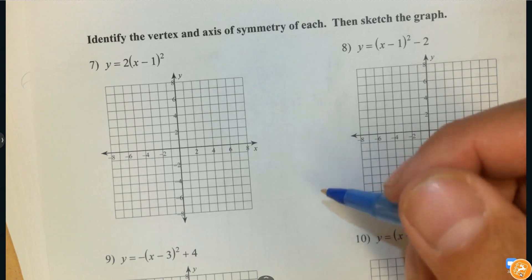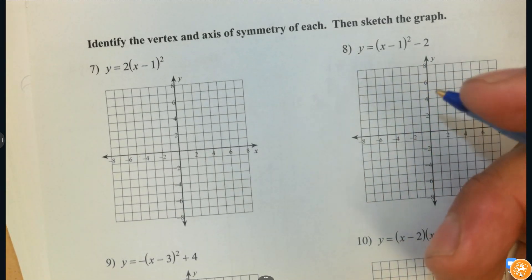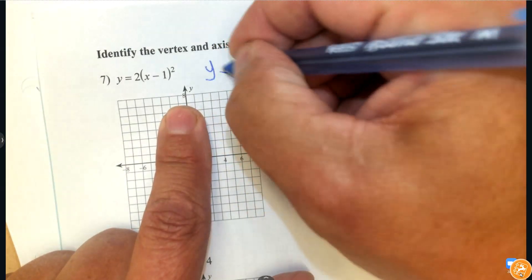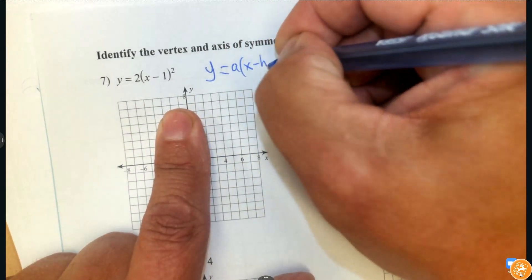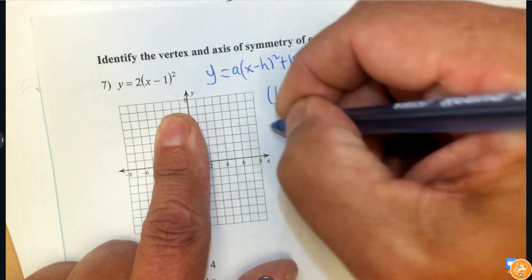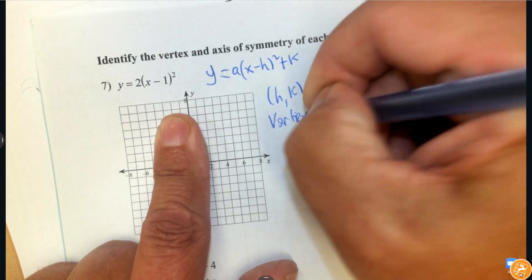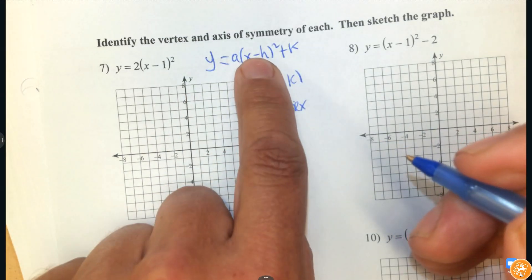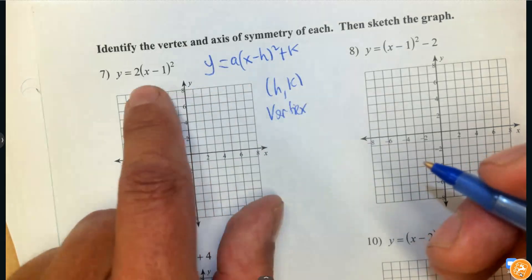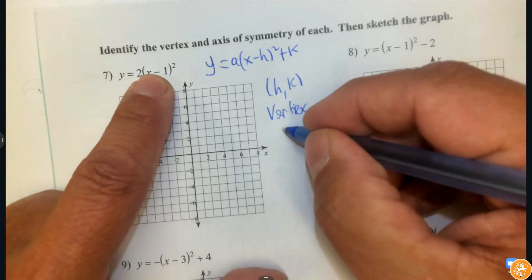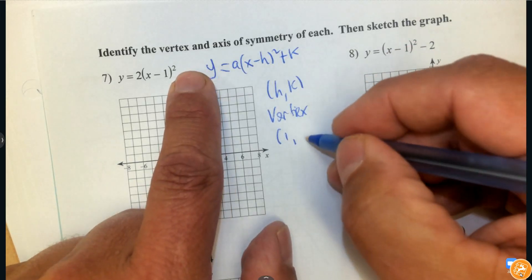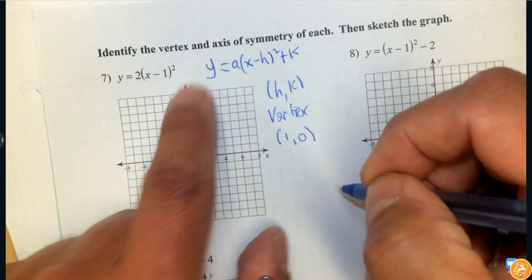So these parabolas are either in vertex form or in intercept form. So this is in vertex form. So vertex form looks like this. And hk is what we call the vertex. It's important to recognize the number inside the parentheses. You change the sign. And what's outside stays the same. So here, this is going to be, the vertex is going to be positive 1. I don't see a number on the outside adding or subtracting. So that means the vertex is at 1, 0.